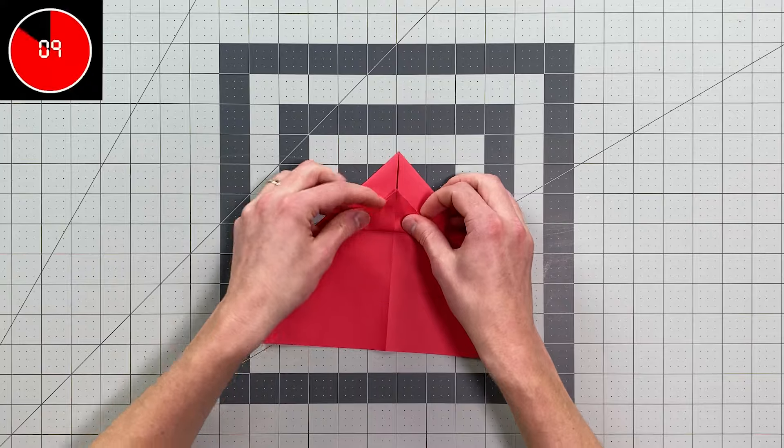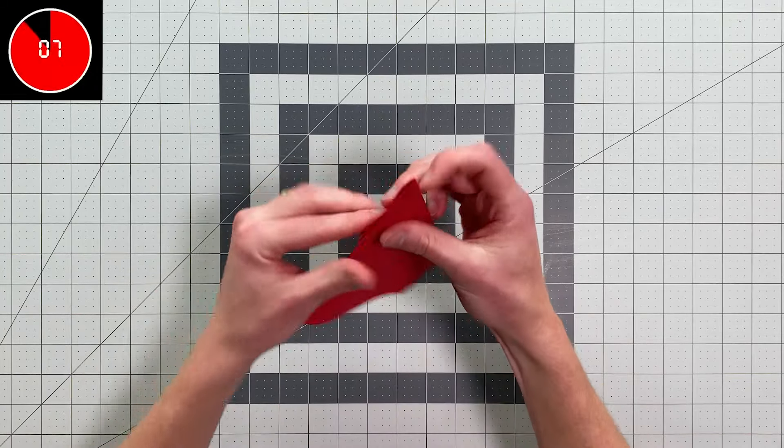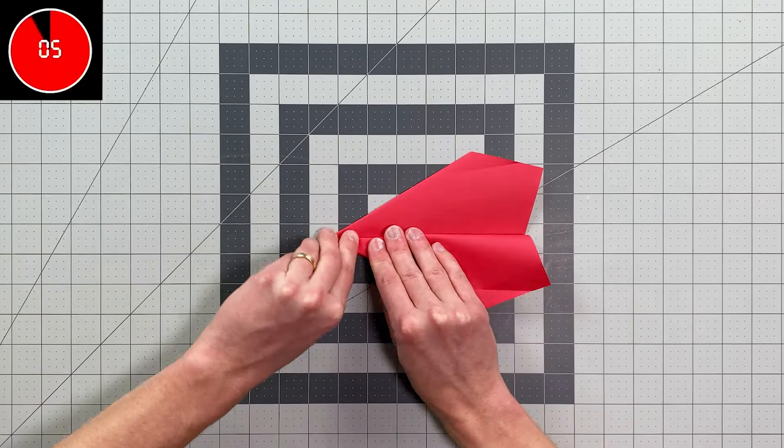And then fold this point up over those edges, fold it in half, and fold your wings just like this.